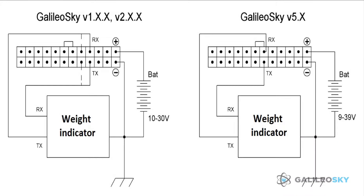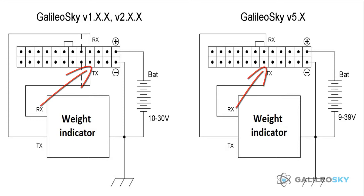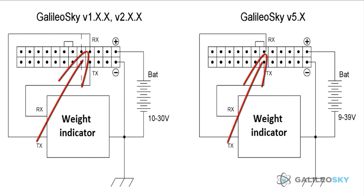Connection of the weight indicator is carried out according to the scheme. Note that the GND grounds of the terminal and indicator should be connected. RS232 contacts should be connected strictly according to the scheme: indicator RX to terminal TX, and indicator TX to terminal RX.